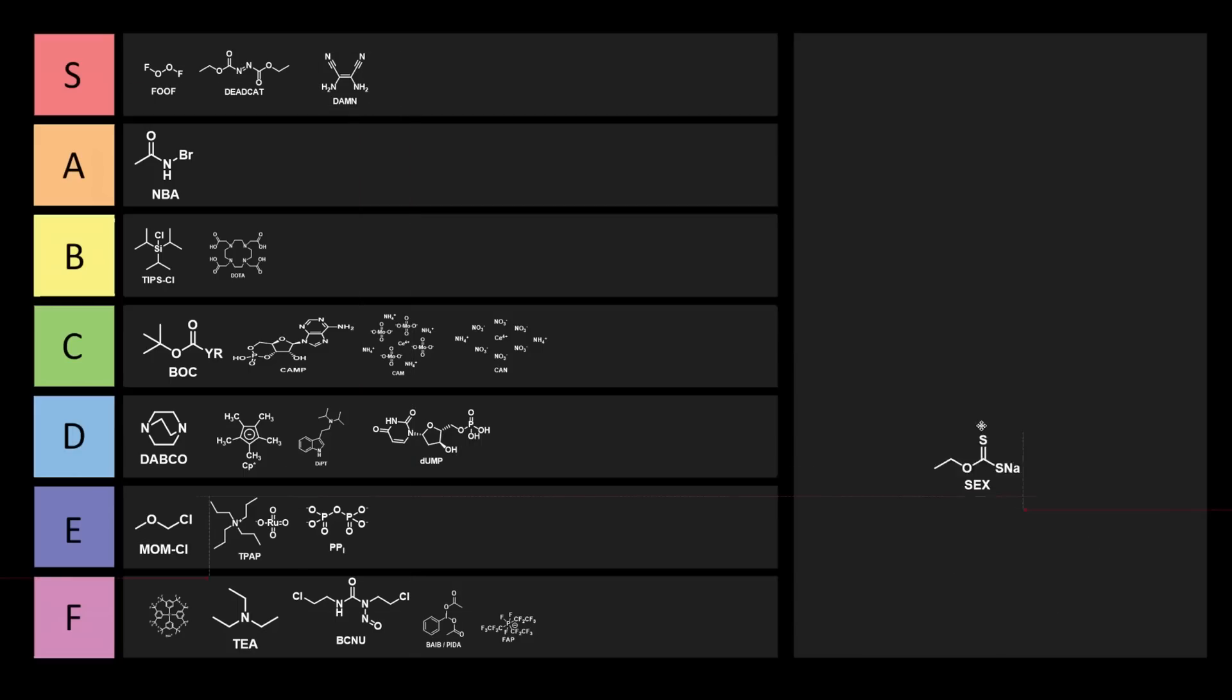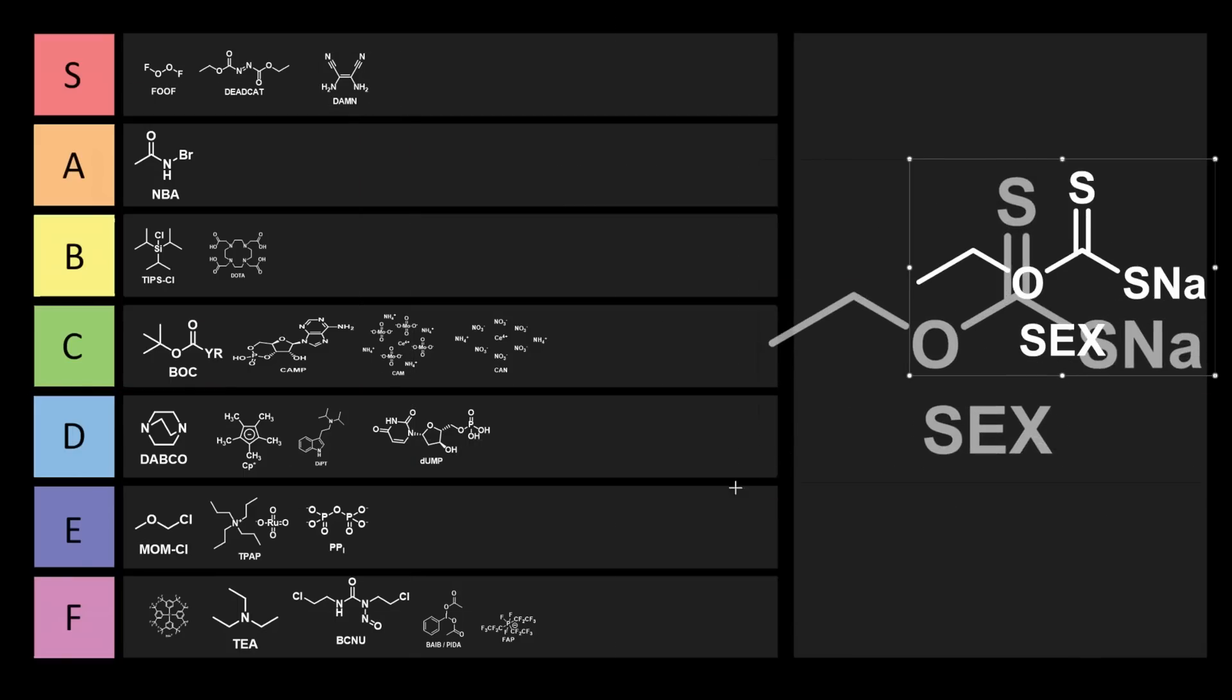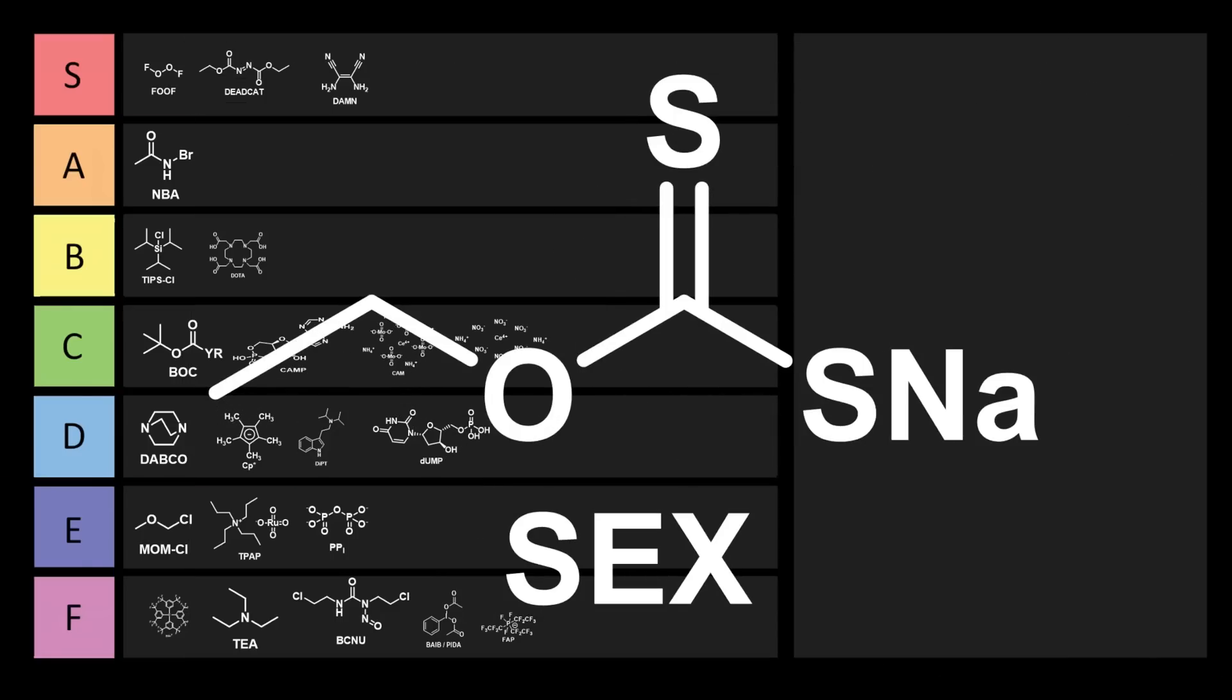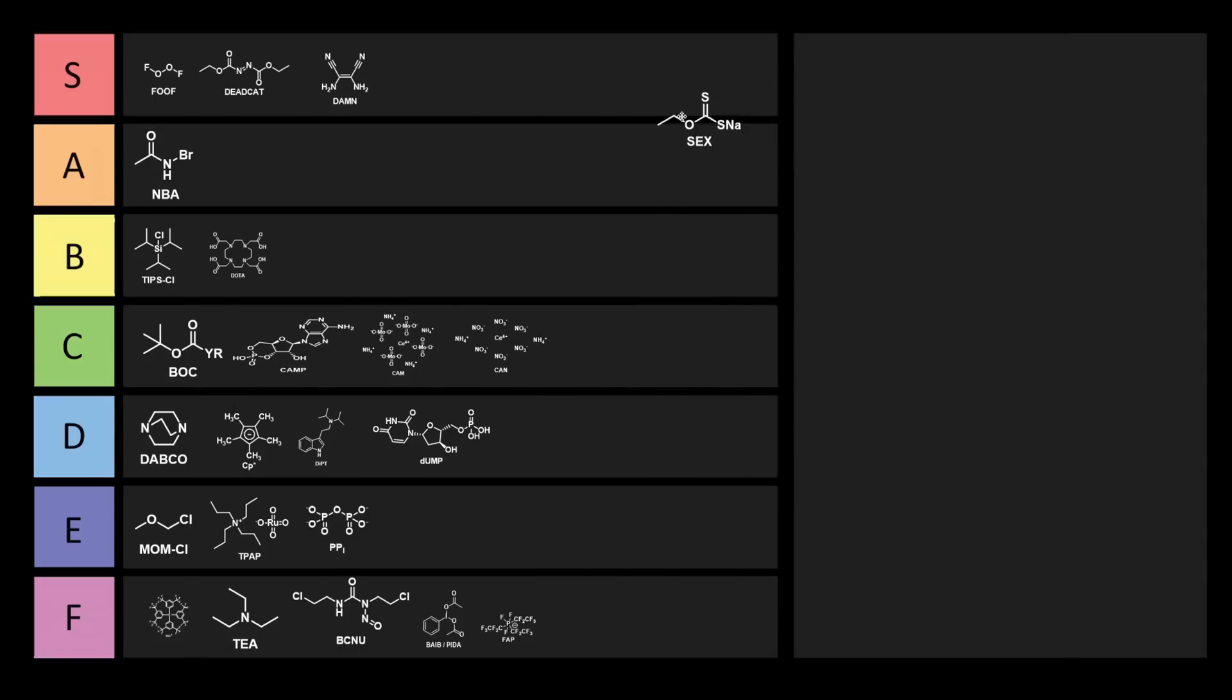And last but not least, we have sodium ethyl xanthate. Some of you wished I'd make the molecules bigger, so I'm going to do that just for you. Here's a nice big SEX molecule. So SEX is sodium ethyl xanthate. This is used as a flotation agent in the mining industry. Flotation has been described as the single most important operation used for the recovery and upgrading of sulfide ores. The way this works is it attaches to the surface of sulfide ores like lead sulfide and copper sulfide, and through the action of air bubbles, it carries the ore to the surface. You might be wondering why this is the last chemical we're talking about today, and that's because I wanted to finish SEX last. Why don't we put this one right into S tier, which is appropriate because it starts with an S.